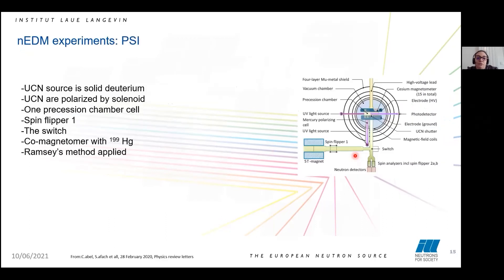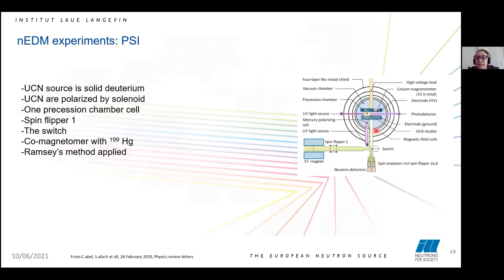This is the EDM experiment at PSI, and I will underline the differences between PSI and ILL. One of the first differences is the UCN source: PSI uses solid deuterium, which gives faster neutrons compared to those used at ILL. For this reason they use a 5 Tesla magnet, meaning they need a much stronger polarizing system. Another difference is that PSI uses a one-cell chamber, and we can see the presence of the mercury co-magnetometer. The Ramsey method is applied inside, and after the spin flip the neutron can go in one direction. A switch prevents the neutron spin from going in the wrong direction, and then it proceeds toward the two spin analyzers and neutron detectors.